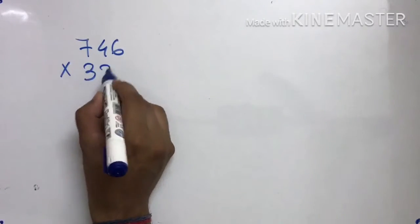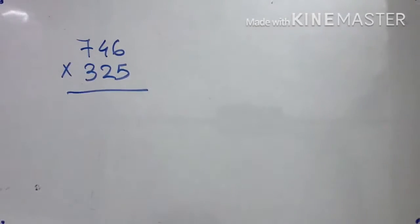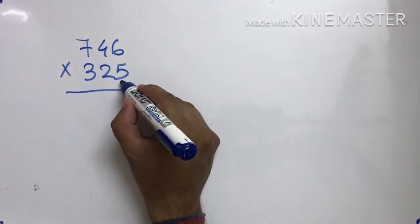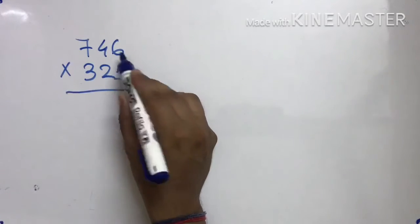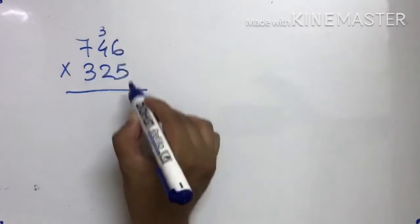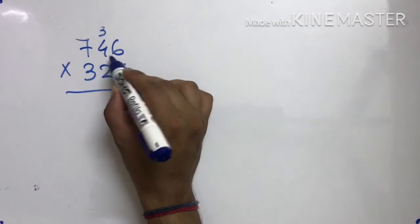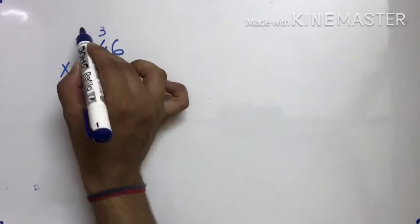746 ko humein multiply karna hai 325 ke saath. First, jo last number hai usko last number ke saath multiply karenge. 5 × 6 = 30. Abhi ye dono ko multiply karna hai: 5 × 4 = 20. 20 plus 3 = 23.